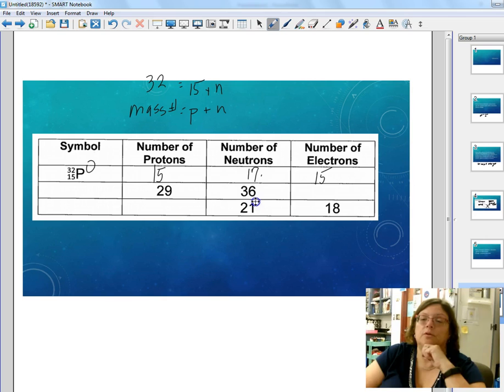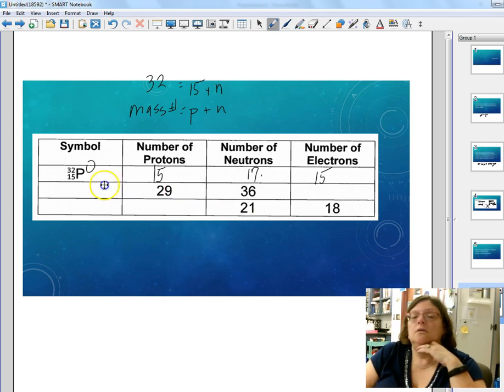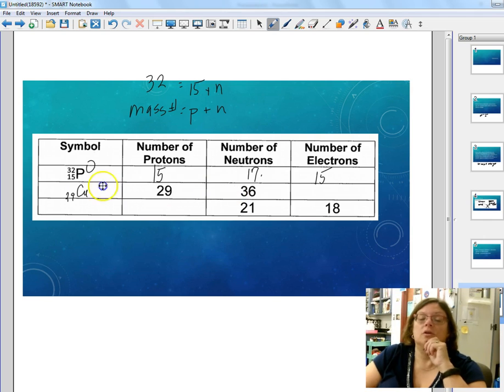Next one, it tells us that we have 29 protons. That tells us that our atomic number is 29. If we look at the periodic table, copper is that element. It tells us we have 36 neutrons. To get the mass number for copper, we have to take 29 plus 36, which is 65.